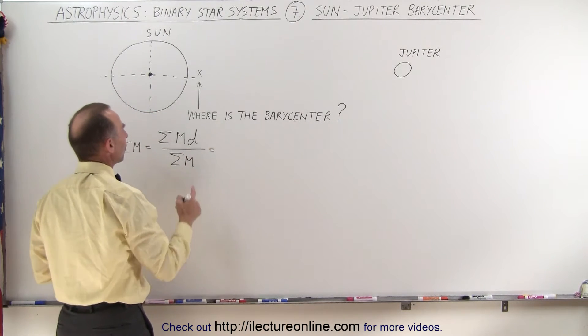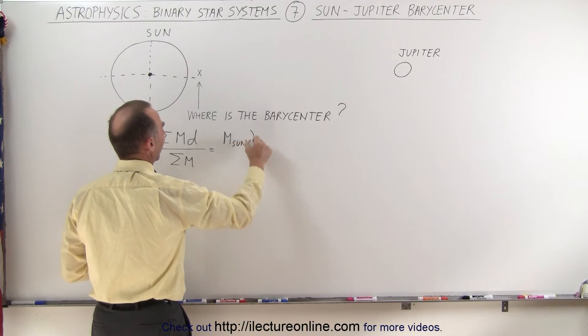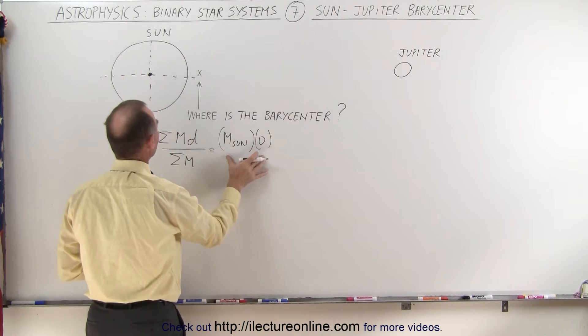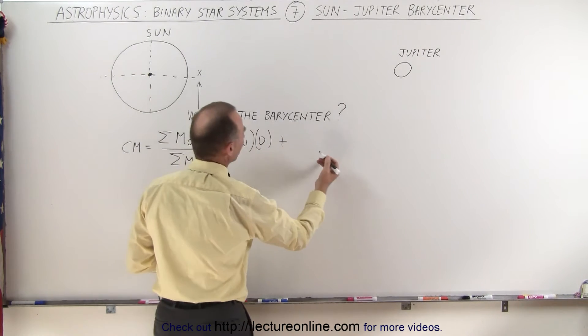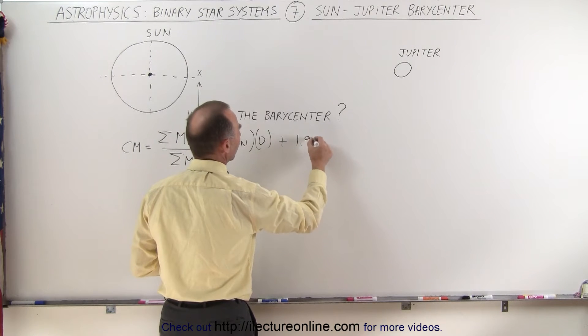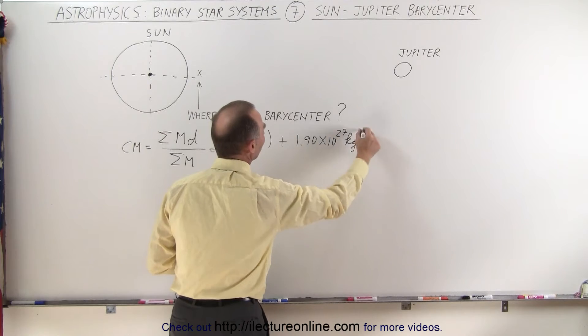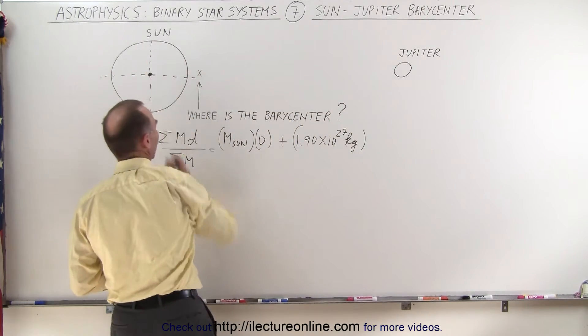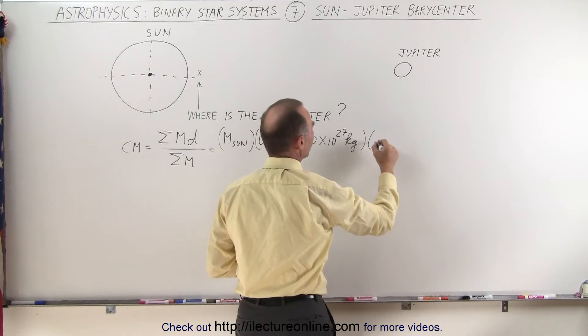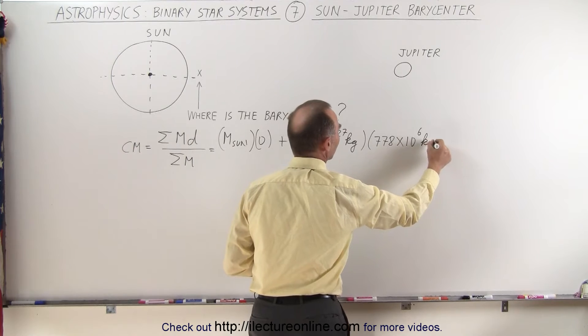In this case, we multiply the mass of the Sun times zero, so we don't have to do that first calculation because that ends up being zero, plus the mass of Jupiter, which is equal to 1.90 times 10 to the 27 kilograms, then multiply times the distance from Jupiter to the Sun, which is 778 million kilometers.